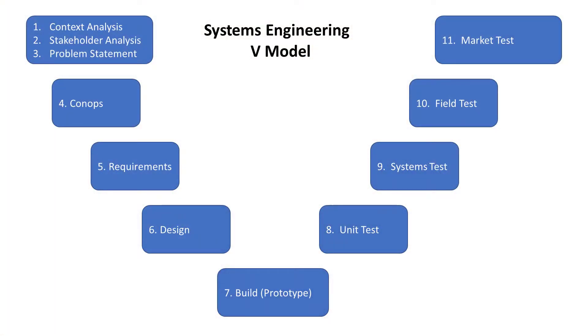Let's review the V-System model of engineering. We always start with the understanding of the big picture of the system, or the context. It's also called the enterprise description because it describes the setting for the events we're looking at, much like the setting of a play. It describes what's happening in the current process, how we can measure the current process, and even the physics behind the current process. It also describes the stakeholders and their relationships with each other.